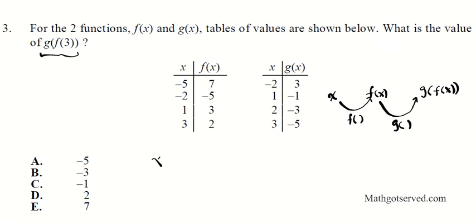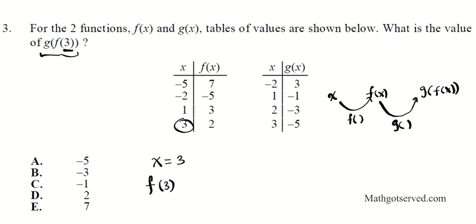Our input x is the innermost value, which is 3. So first we look for F(3) using the table that relates F and x. Looking up x = 3 in the F table: the output is 2. So F(3) = 2. This function has taken us from 3 to the value 2.